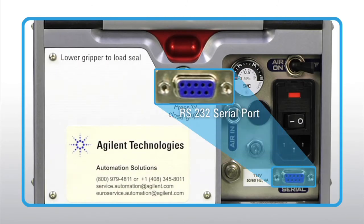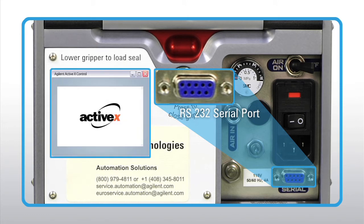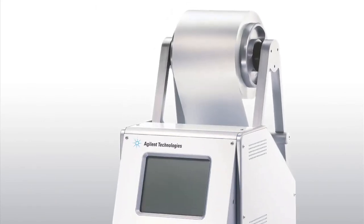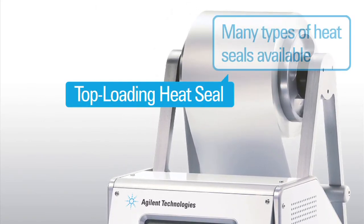An extended travel plate stage, RS232 serial port, and ActiveX control make PlateLock the ideal sealer for robotic integration. The EasyView top-loading heat seal support makes it easy to replenish the heat seal supply.